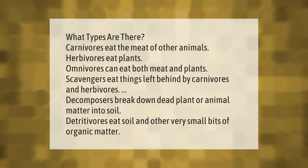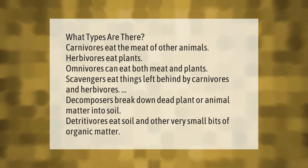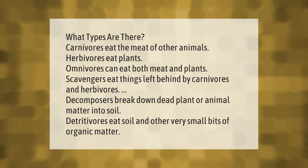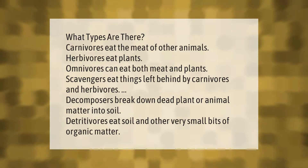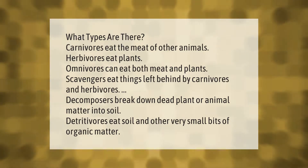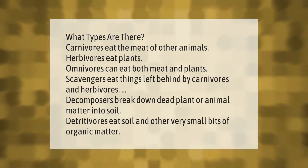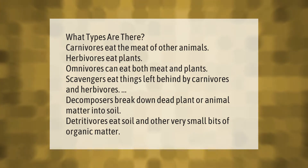What types are there? Carnivores eat the meat of other animals. Herbivores eat plants. Omnivores can eat both meat and plants. Scavengers eat things left behind by carnivores and herbivores. Decomposers break down dead plant or animal matter into soil. Detritivores eat soil and other very small bits of organic matter.